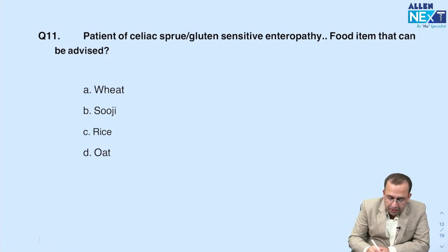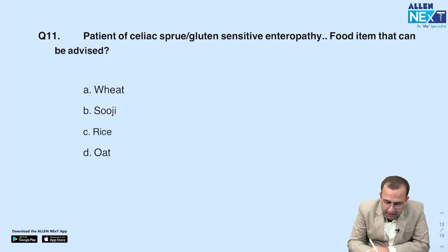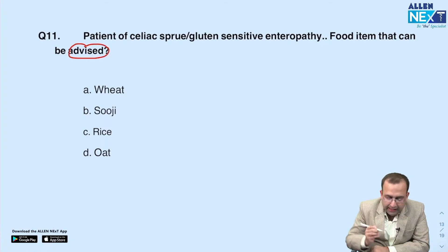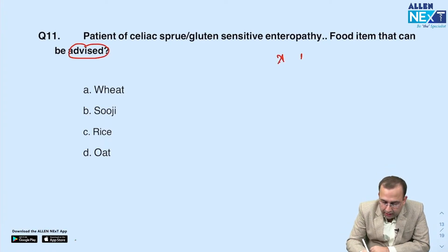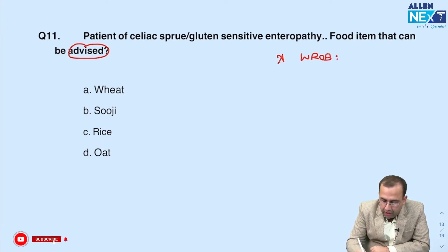A tricky question on celiac disease: the food item the patient can eat. You know he cannot eat wheat, rye, oats, or barley — these are the items to avoid in celiac disease.